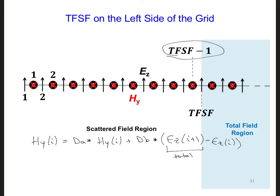This total field we can relate to the scattered fields using the equation we wrote earlier, incident plus scattered, which means that we can convert this total field into a scattered field by subtracting the incident wave.